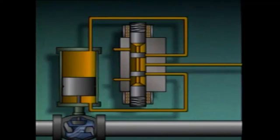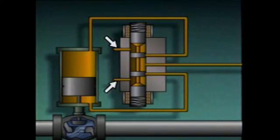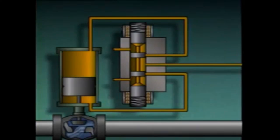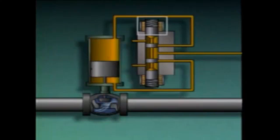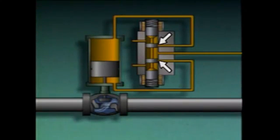A pilot valve consists of a valve body, two solenoids, a spool, a spring at each end of the spool, a hydraulic fluid supply port, two hydraulic fluid ports to the actuator, and two hydraulic fluid vent ports. The pilot valve is operated by the solenoids — electrical coils that respond to signals from a controller to position the spool. When both solenoids are de-energized, the springs return the spool to a neutral or centered position, blocking the fluid lines to the actuator cylinder and holding the actuator's piston in place.